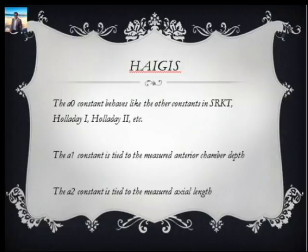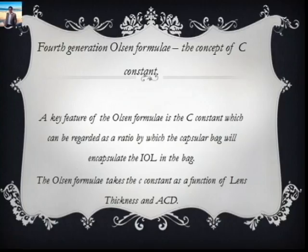In order to optimize the Haigis constant, you can only optimize the a0 constant. You cannot optimize the a1 and a2 constants yourself — to optimize those, you have to send the data to Dr. Olf Haigis.